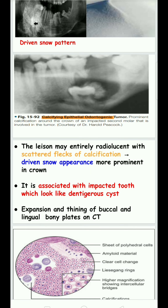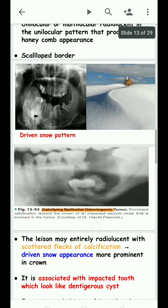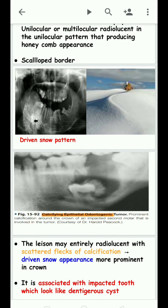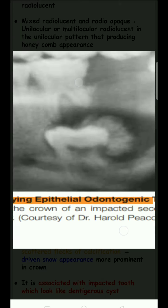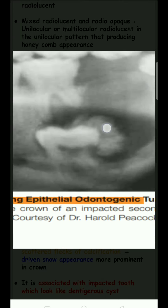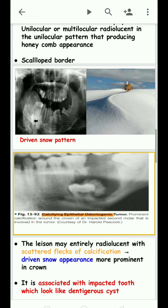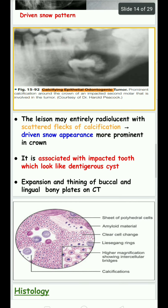The lesion may be entirely radiolucent with scattered flecks of calcification, giving a driven-snow appearance. This driven-snow appearance is particularly present in the coronal area when the tooth is unerupted. It is associated with an impacted tooth, resembling a dentigerous cyst.